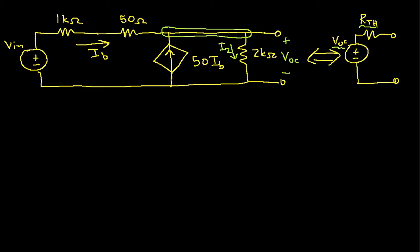I get that the sum of the currents entering the node, which in this case would be IB plus 50*IB, this is equal to what I've called I2 here.